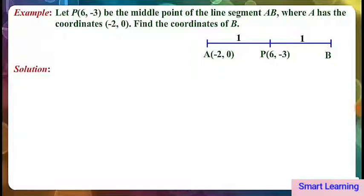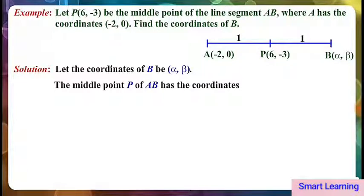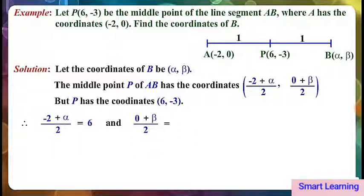Let's solve this. Let the coordinates of B be alpha comma beta. The midpoint P of AB has the coordinates: minus 2 plus alpha divided by 2, comma, 0 plus beta divided by 2. But P has the coordinates 6 comma minus 3. Therefore, minus 2 plus alpha divided by 2 is equal to 6, and 0 plus beta divided by 2 is equal to minus 3.